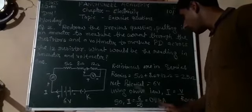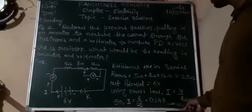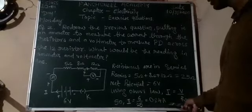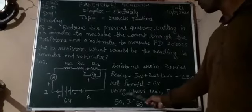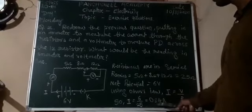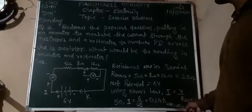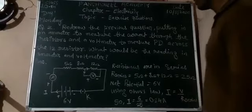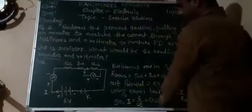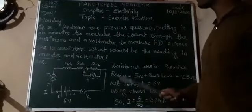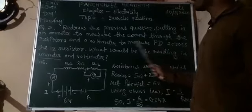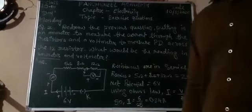The unit of current is ampere. So the current flowing in the circuit is 0.24 ampere. Therefore, the reading of the ammeter is 0.24 ampere. Now we will calculate the reading on the voltmeter.